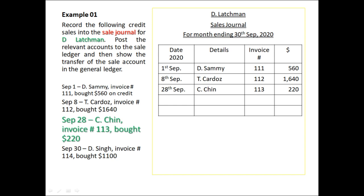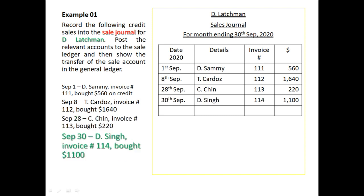The third transaction: 28th September, C. Chin, invoice number 113, bought $220 worth of goods on credit. Place the 28th of September in the date column, C. Chin in the detail column, invoice number 113 in the invoice column, and $220 in the amount column. The fourth transaction: 30th September, D. Thing, invoice number 114, bought $1,100 worth of goods on credit — record this in the same way.